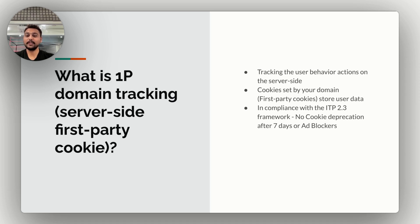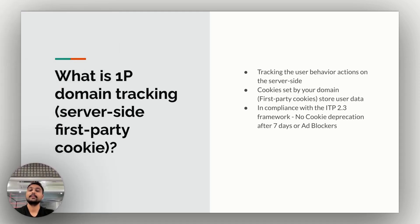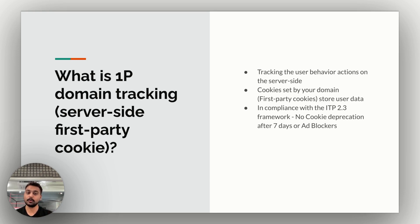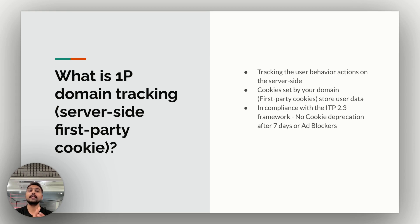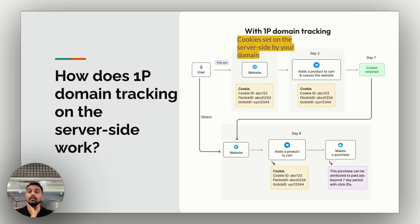What is 1P domain tracking? Server-side first-party cookie tracking for your WooCommerce store involves setting first-party cookies from the server side to track your users' journey. These first-party cookies originate from the first-party domain itself rather than from a third-party domain. This means when a user visits your WooCommerce store, the cookies are created and managed by your domain. Ad blockers and browsers like Safari and Firefox will not deprecate or block these first-party cookies because they recognize them as first-party, giving them a longer lifespan and improved data retention.